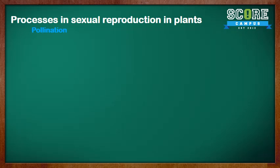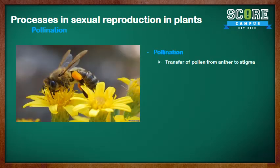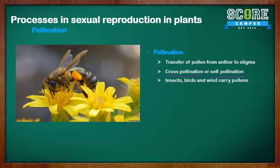Starting off, we have pollination. Pollination is the transfer of pollen from the anther to the stigma of the flower. The pollen can come from the same flower — that is self-pollination — or it can come from another flower, which is called cross-pollination. Insects, birds, or the wind can help carry pollen from the anther to the stigma. Flowers pollinated by birds or insects are usually large, colorful, and smell nice to attract these pollinators.